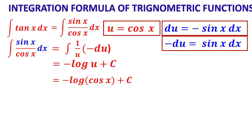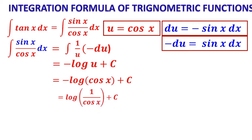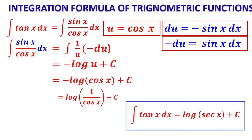The minus sign can be avoided by writing −log|cos x| as log|1/cos x| = log|sec x|, using the property of logarithms. Therefore, ∫tan x dx = log|sec x| + C. This is the standard formula for the integral of tan x derived by substitution.